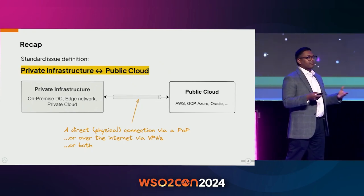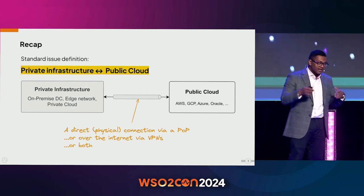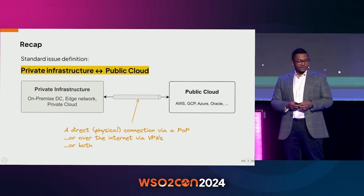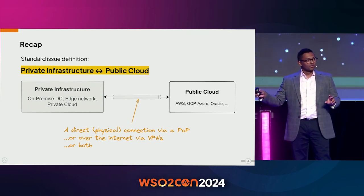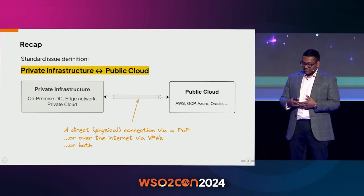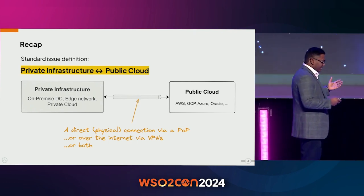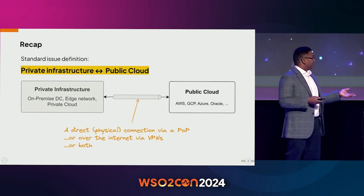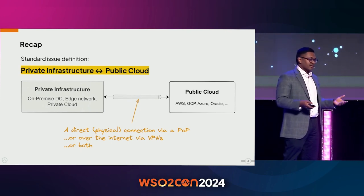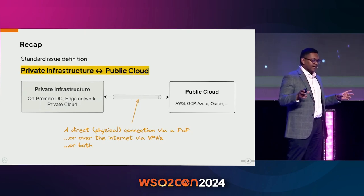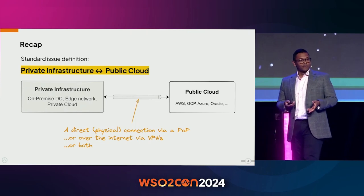Let's go through some standard definitions of what hybrid cloud is. Generally, you've got some piece of private infrastructure — it could be your on-premise data center, some edge network, or private cloud — and you connect that up through some network interface to a VPC or VNet on a public cloud provider. This is often done through VPNs, usually with a couple of VPN instances for failover.